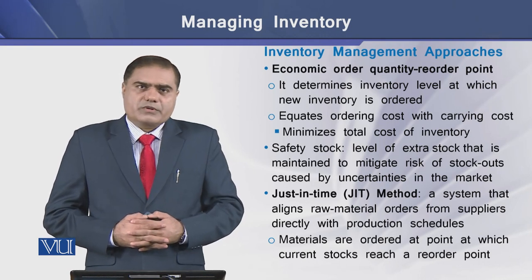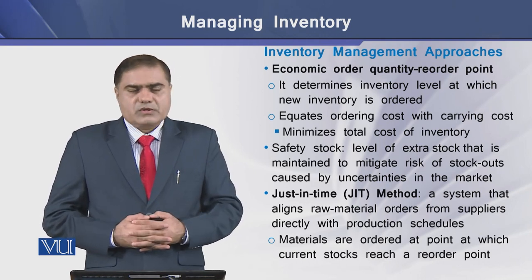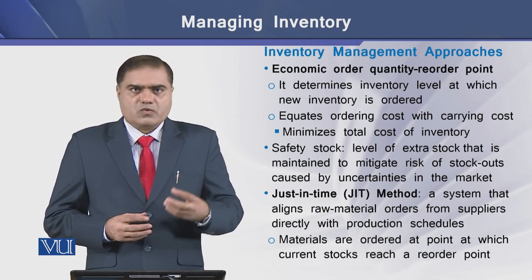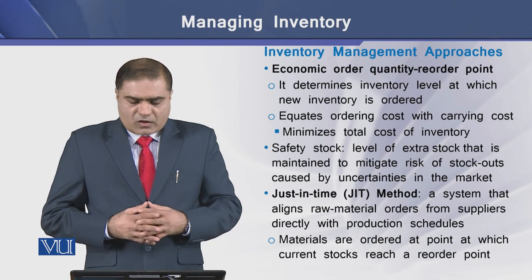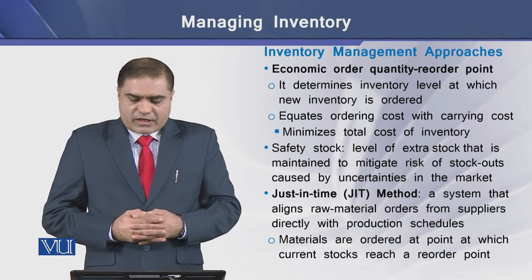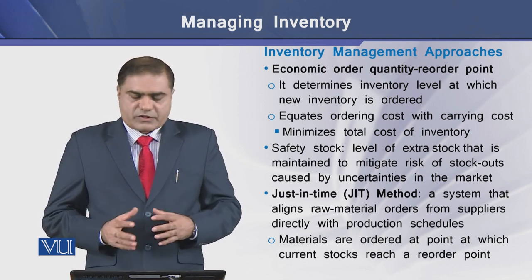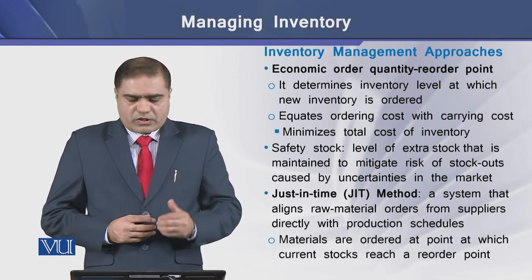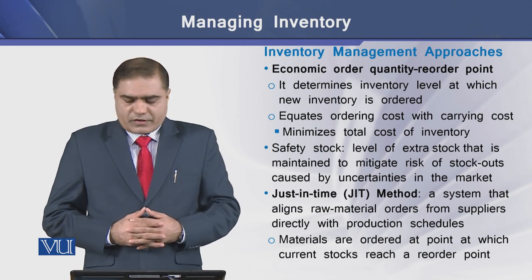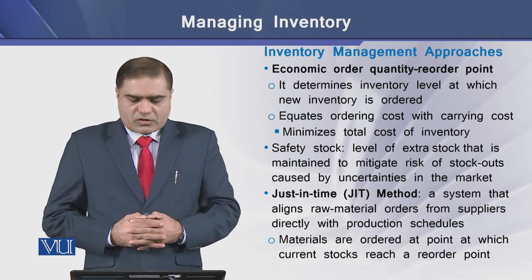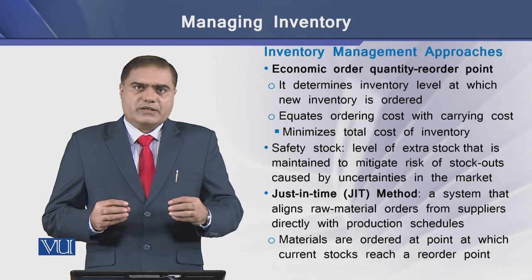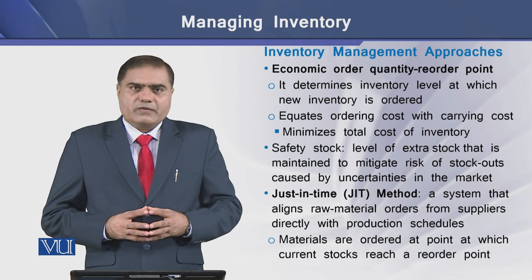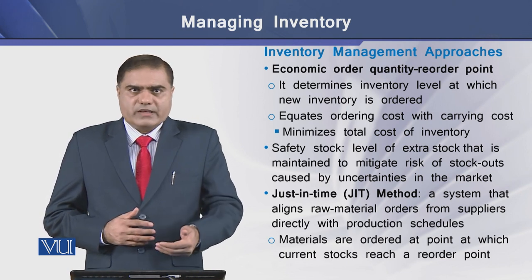Regarding inventory management approaches, the first is the Economic Order Quantity, or EOQ. It is a well-known quantitative model that allows a firm to determine the inventory level at which new inventory should be ordered. EOQ equates the firm's ordering cost with the carrying cost of inventory, and at the EOQ level, the total cost of inventory is minimized.